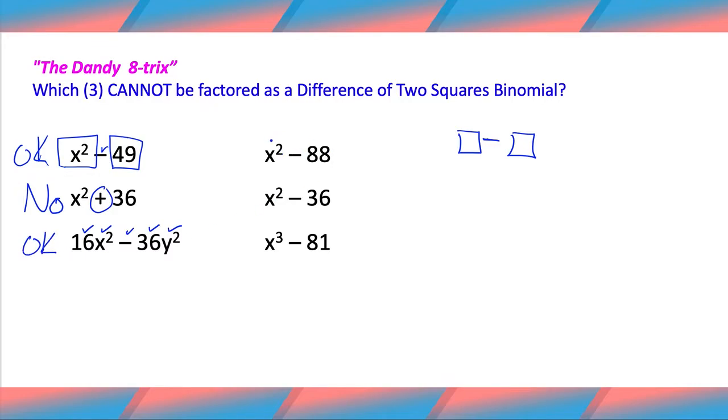x squared minus 88. You're a square. You're a minus. Sorry, 88, you're not on the list. So you fail. So this is going to be a no.